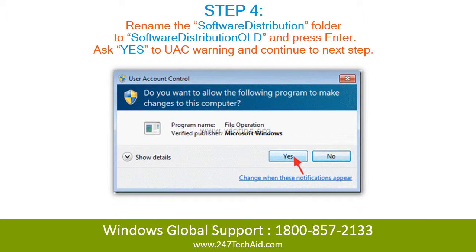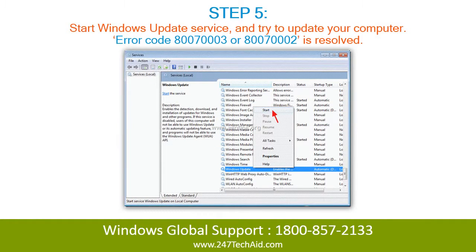Step 4: Rename the Software Distribution folder to SoftwareDistribution.old and press Enter. Click Yes to the UAC warning and continue to the next step. Step 5: Start Windows Update Service and try to update your computer. Error code 80070003 or 80070002 is resolved.